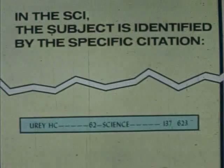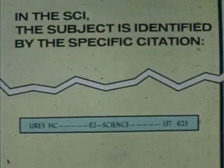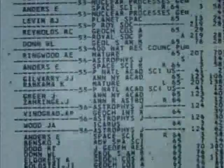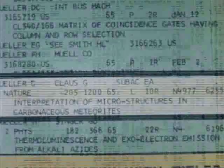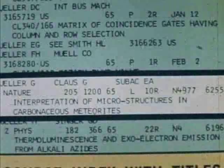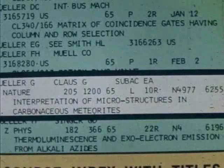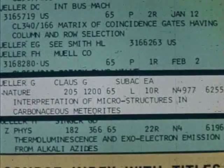Indeed, in the 1965 citation index, under Urey, H.C., we find many of his publications cited, and in particular our starting reference. Right below is the entry: G. Muller, Nature, 1965, Volume 205, page 1200. In the source index, we find it is a paper by Muller on interpretations of microstructures in carbonaceous meteorites. Thus, it was possible, by a very routine search, to find relevant information on this topic, even though the terminology used by Muller and Urey is not exactly the same.